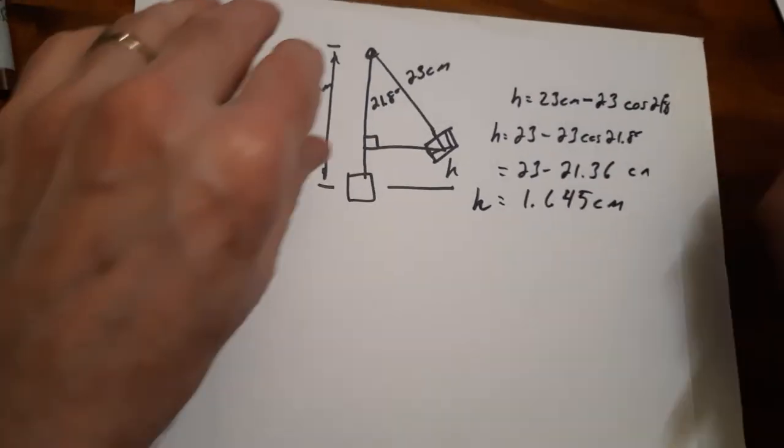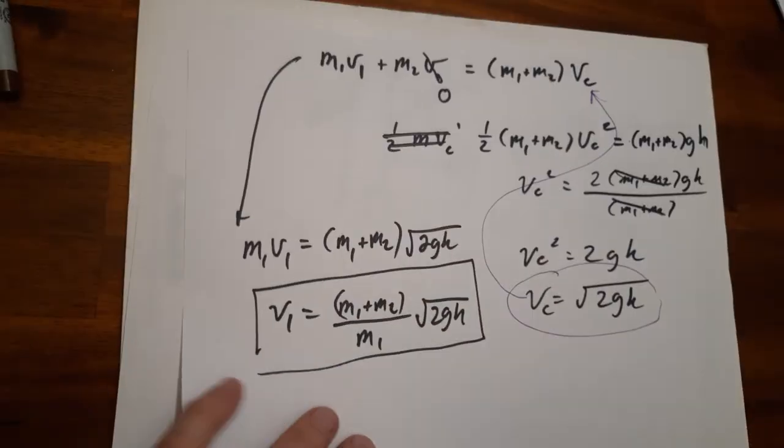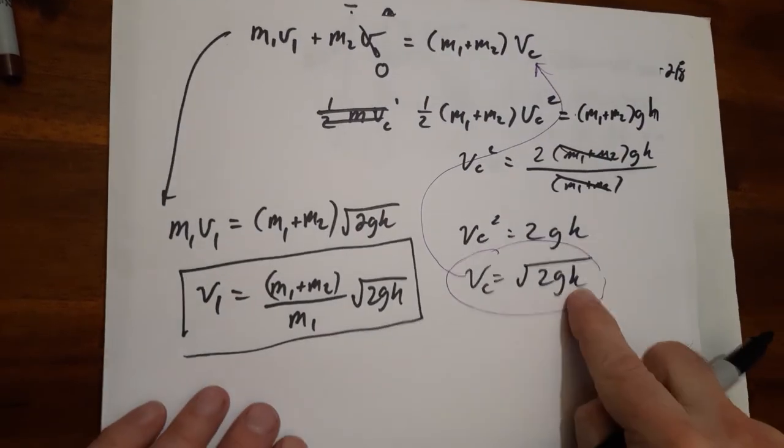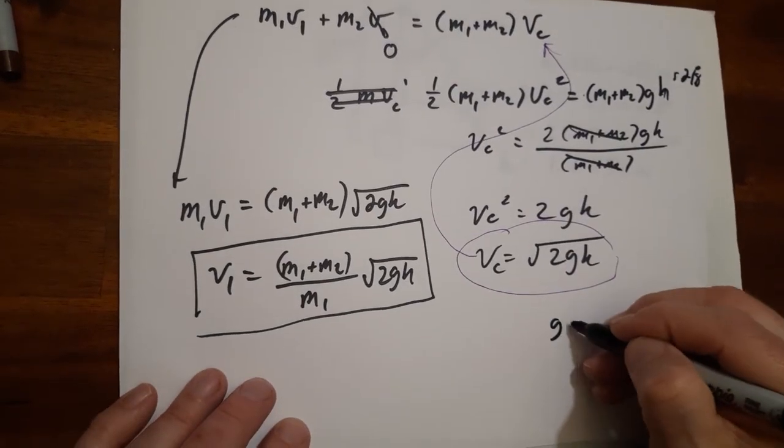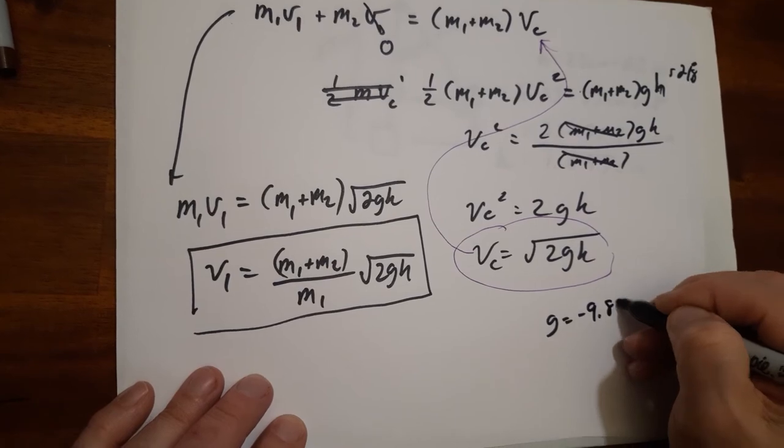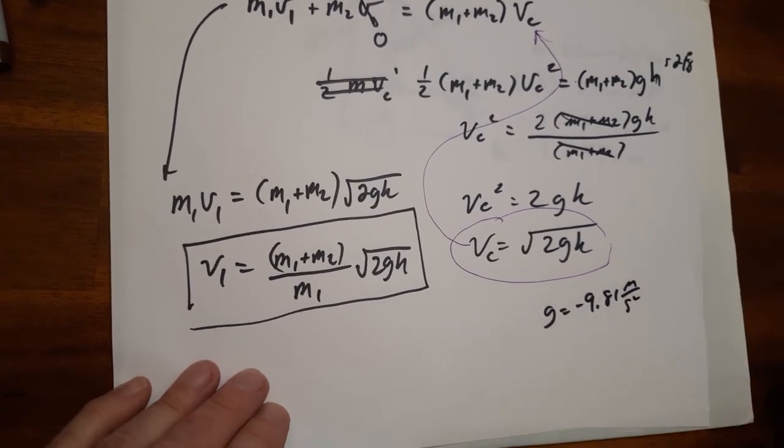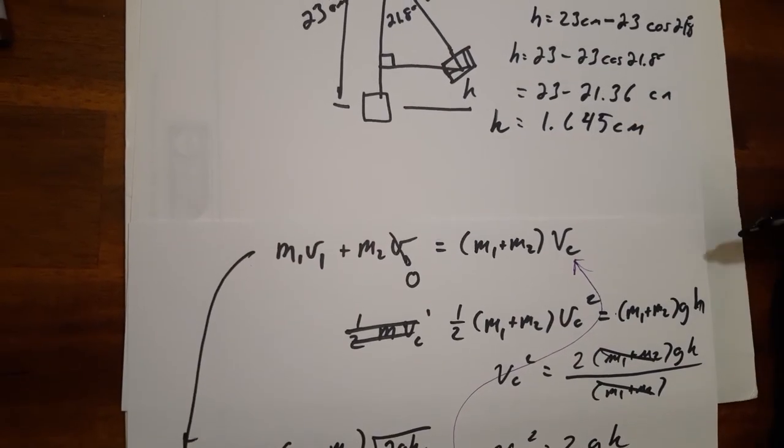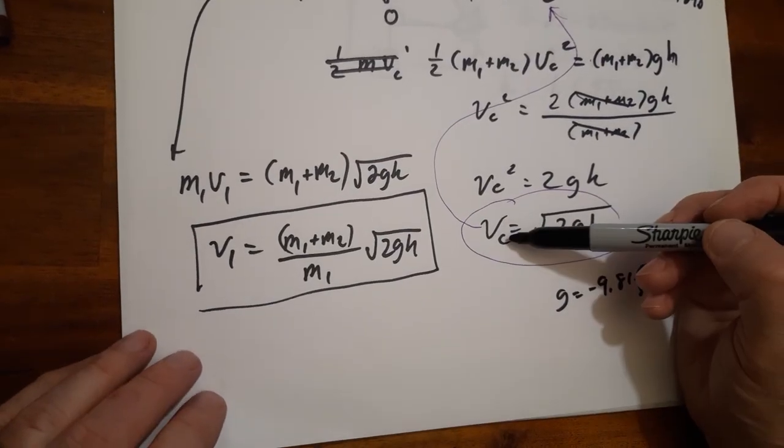So now we go back to our other equations. Like I said, now that we have H and G is just minus 9.81 meters per second squared, convert the meters. Now that we have H, we can find V.